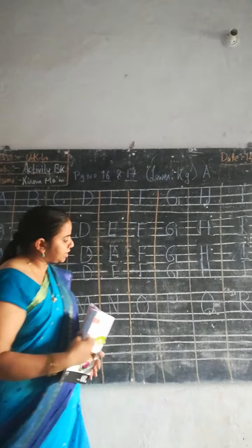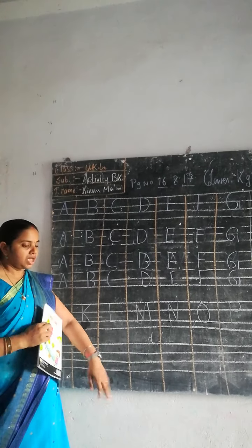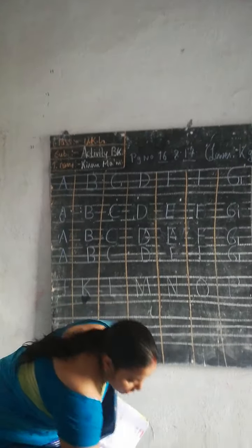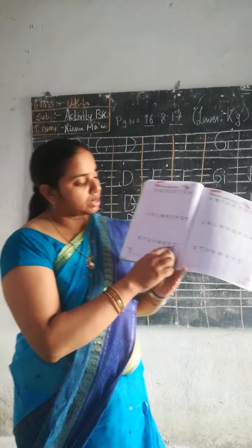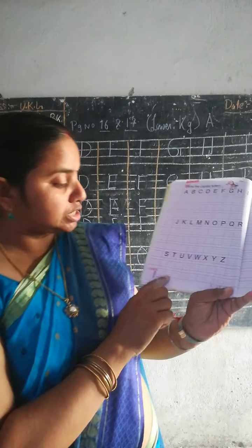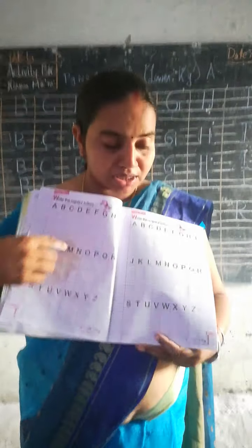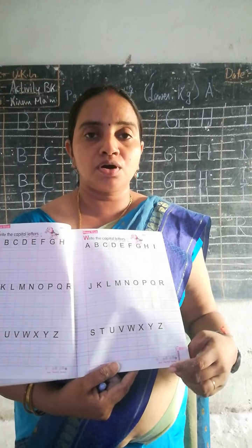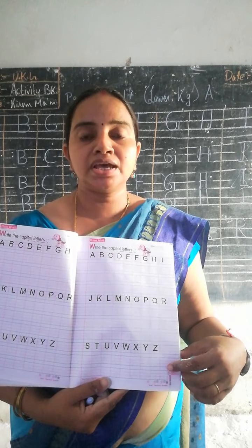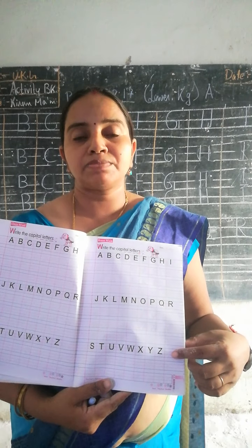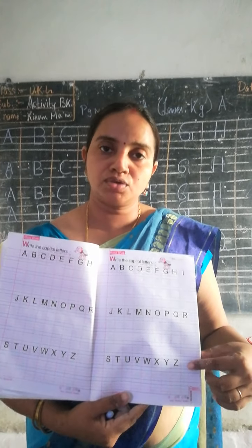After that there is one more line — that is S, U, V, W, X, Y, Z — you will write these also in the next two lines given to you. Is that clear? I presume this is informative for the students of class LKG. Please complete it till page number 17 and see that you are submitting your books in school. Thank you, have a nice day.